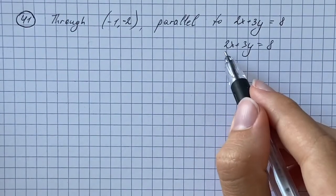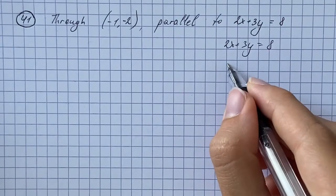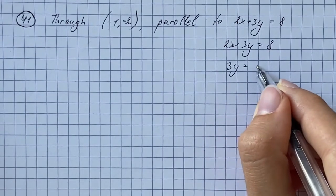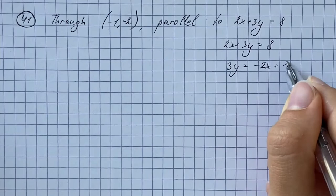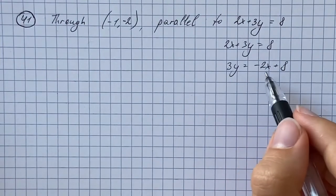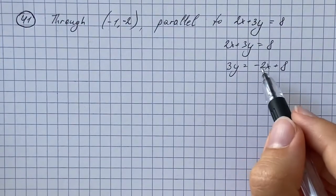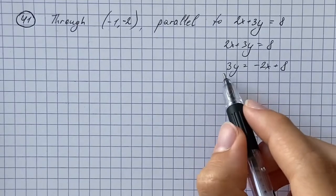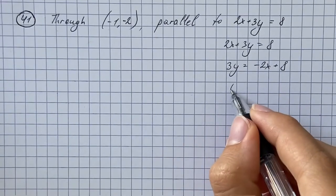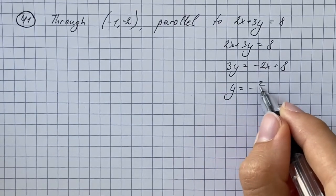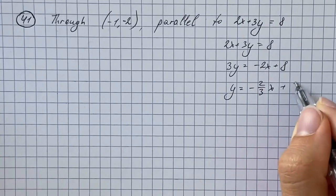First we're going to subtract 2x from both sides and we get 3y equals negative 2x plus 8. Now we're going to make it in the form of y equals mx plus b, so we divide both sides by 3 and we get y equals negative 2/3 x plus 8/3.